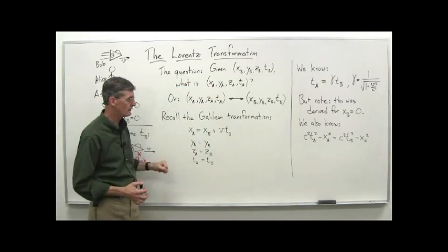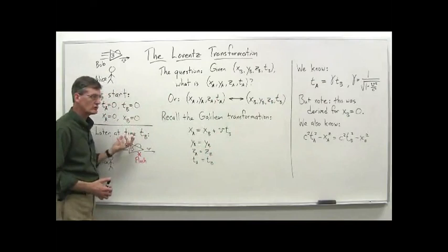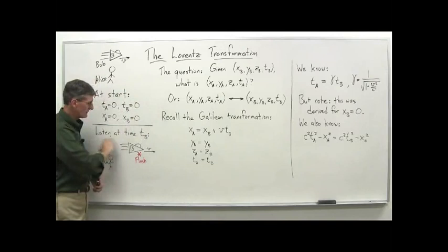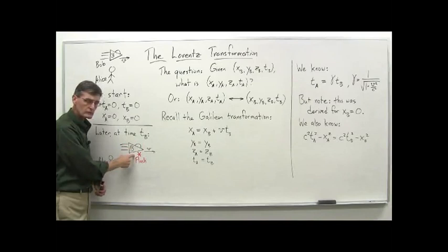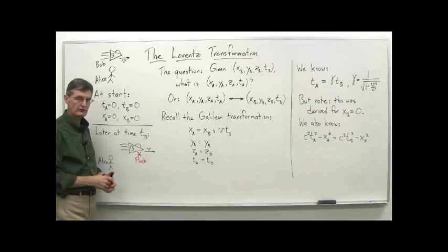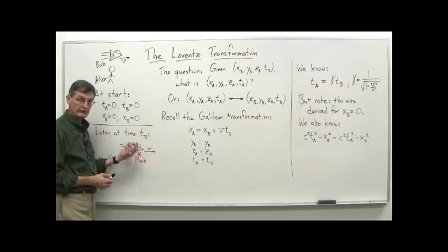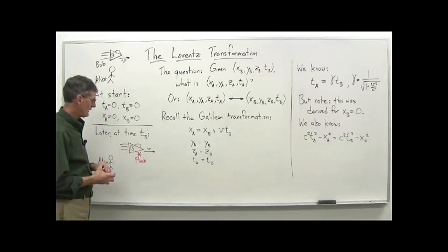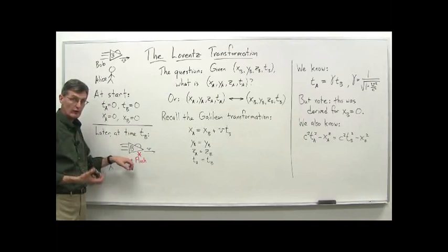Let's set up a situation for Bob and Alice. Later at time T sub B, according to Bob's clock, he sees a flash of light right at his cockpit. That flash is occurring at X sub B equals zero, because he's carrying his measuring system along with him. As far as he's concerned, he's at rest. We can figure out where Alice sees that flash of light and at what time, given X sub B and T sub B for Bob.